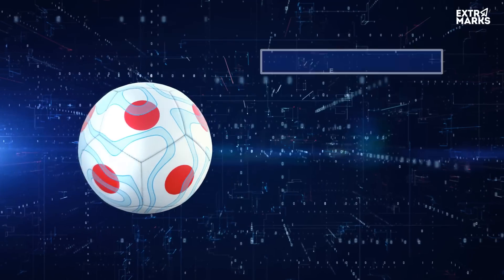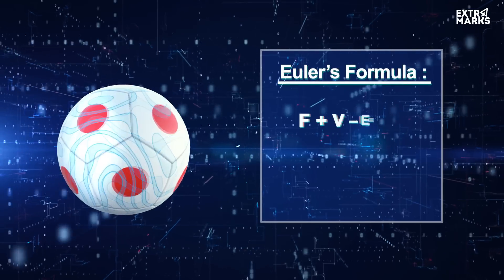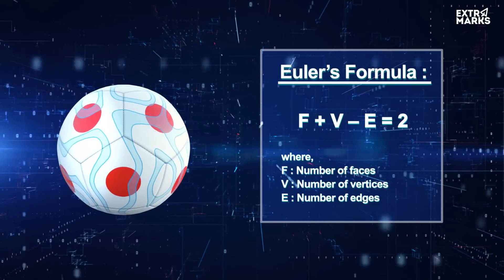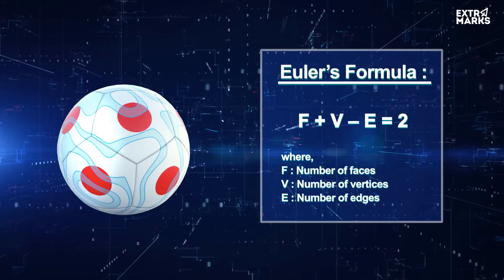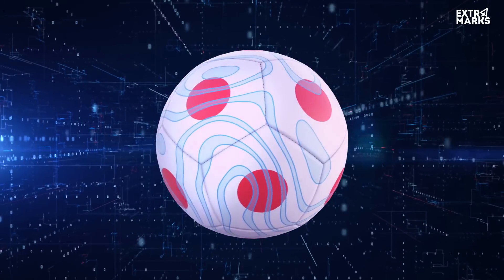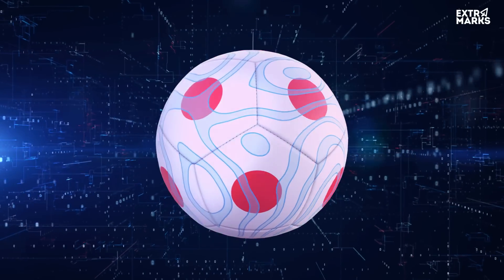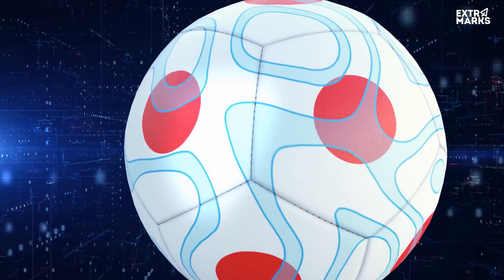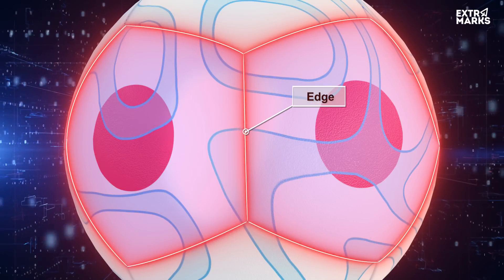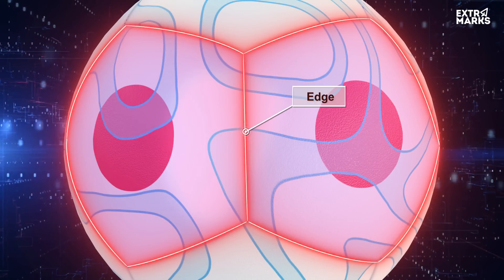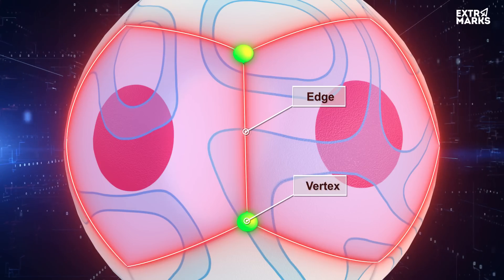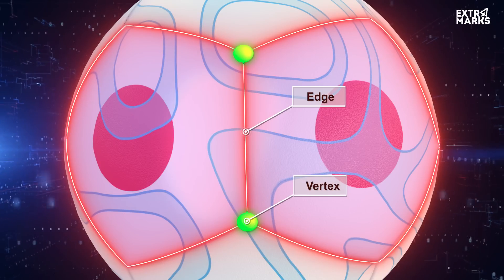Euler's formula for any polyhedron can be used to provide a solution to this query. A polyhedron's polygonal faces meet at edges, which are line segments, and the points where the edges meet are called vertices.